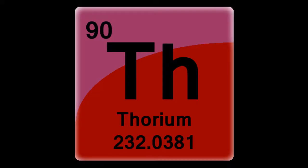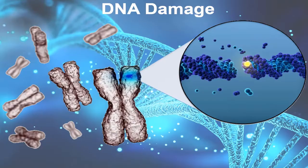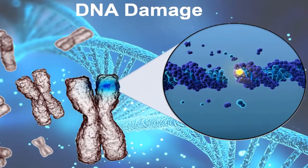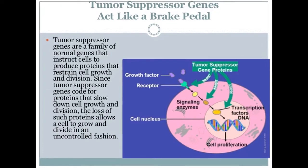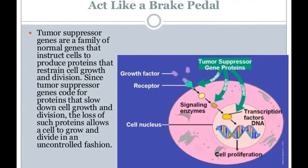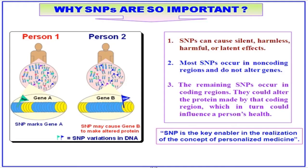Thorium exposure damages DNA in the form of SNPs. These SNPs, or single nucleotide polymorphisms, result in the creation of inaccurate proteins and enzymes in the body, resulting in the inability to produce important tumor-suppressing factors that help kill cancer as it forms. Multiple SNPs to your DNA can have a detrimental effect on the structure and function of cells, and can raise the risk of developing cancer and other disease.